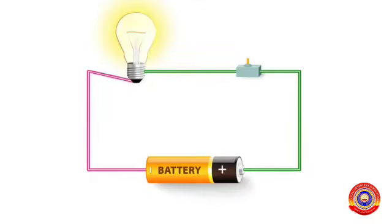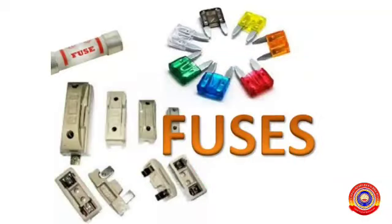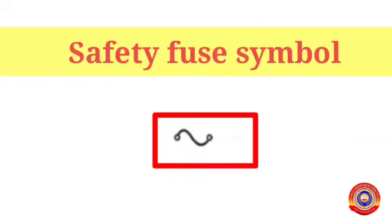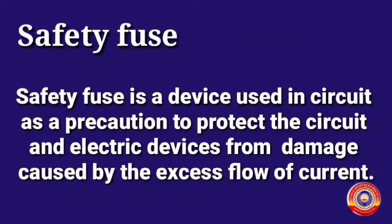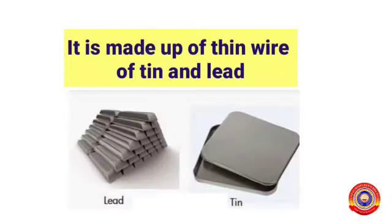So now you have got an idea about some simple electrical circuits. It is very essential to operate devices by making sure of the safety of the electrical circuits through which current flows. Safety fuse is one such device used in circuits for safety. Do you know the symbol of safety fuse? Safety fuse is a device used in a circuit as a precaution to protect the circuit and electric devices from damage caused by the flow of excess current. It is made up of a thin wire of tin and lead.